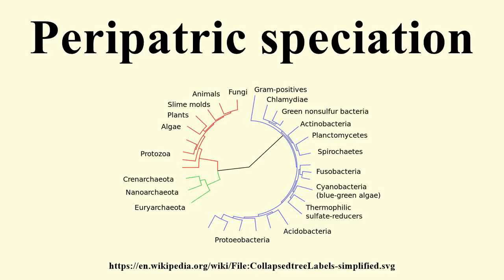Peripatric and peripatry are terms from biogeography, referring to organisms whose ranges are closely adjacent but do not overlap, being separated where these organisms do not occur — for example, on an oceanic island compared to the mainland.